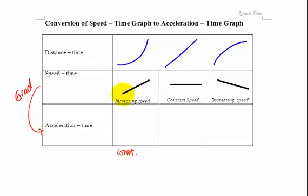So this is a line with a positive gradient. So your acceleration will have a positive value and it looks like this. It's a horizontal line. Let's move. Now the second section of this is this line here.